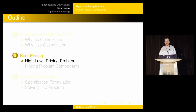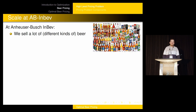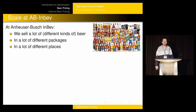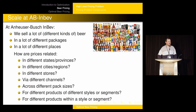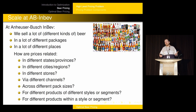Let's talk about Anheuser-Busch's problem. We sell a lot of beer — many different kinds, more than I listed — in a lot of different pack sizes: singles, six-packs, 12-packs, 24-packs, 36-packs, 8-packs, different bottle sizes, cans, and draft in kegs. And there are lots of different relationships between all these prices. In different states and provinces, there might be regulations on how we can price beer, and these will be relevant to our pricing problem.